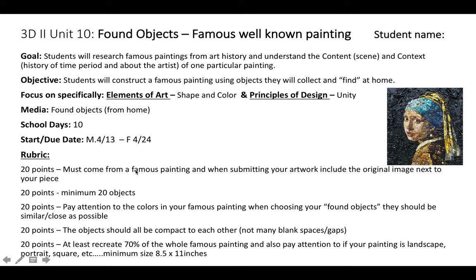Your points breakdown: it has to be a famous painting, and when submitting your artwork include the original image next to your piece so we can compare what you did to what the famous painting looks like. Minimum of 20 objects. Pay close attention to the colors in your famous painting — when choosing your found objects they should be as similar and close as possible. Think about blank spaces in the background and make sure objects are compact to each other, nothing spaced out, so the background still looks activated.